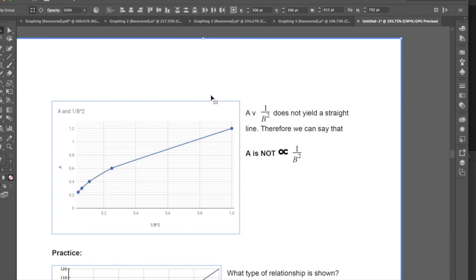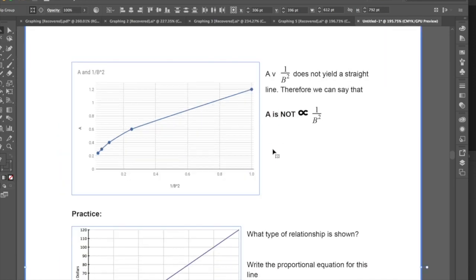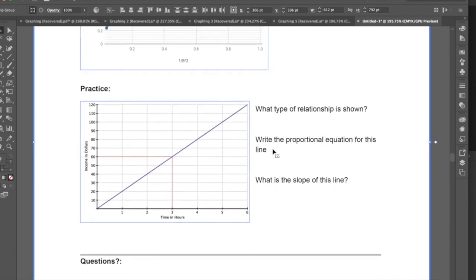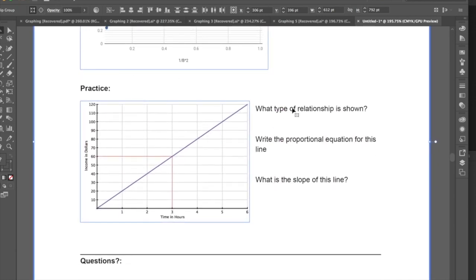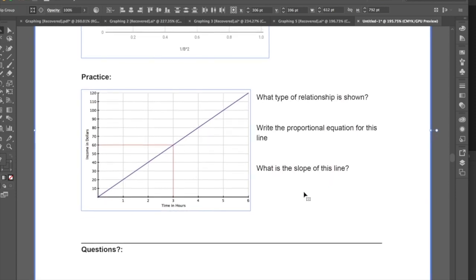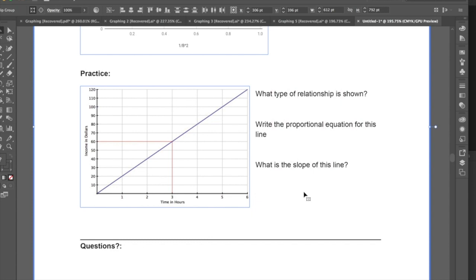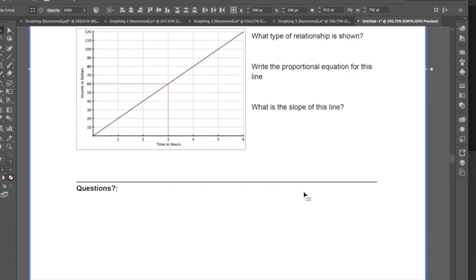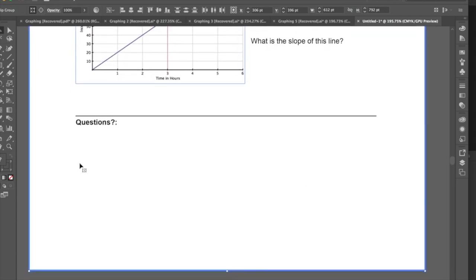So that's all I really wanted to go over for that. Again, I really want to encourage that, to do these practice questions, so tell me what type of relationship is shown, write the proportional equation for this line, so the dependent variable is proportional to what, and then calculate the slope of this line. So again, rise over run, y2 minus y1 over x2 minus x1. I really encourage you guys, as you guys go through this, to write down any questions, so we can go over them in class, and make sure that we can get this as hammered down as possible.